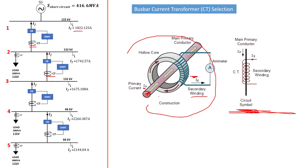For example, for a 1000 to 5 rating — that means a 1000A primary to 5A rating, or 200 to 1 — a 1000 amp flowing on the primary core will produce 5A on the secondary, and that 5A can be measured by the ammeter connected here. In our case, this is going to be a protection current transformer, not a metering one. It will send a signal to the relays, and the relay will trip the circuit breaker. So the protection CT must be used in combination with a tripping device like our IDMT and a circuit breaker to trip the breaker when there is an overload or a fault on the system.